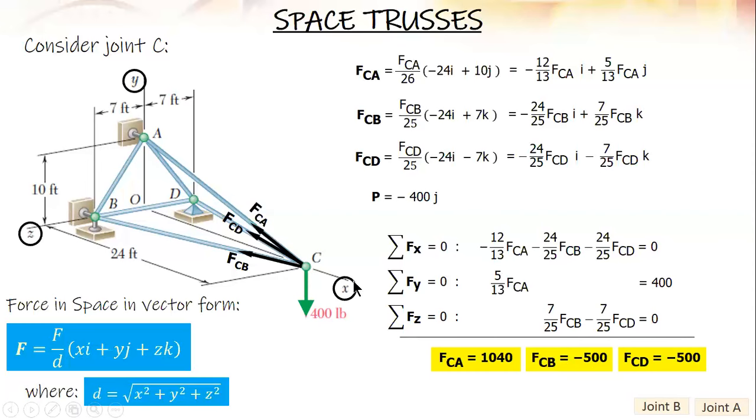After this, proceed to the joint with only three unknowns. At B you still have four unknowns: BA, BD, and two forces at the link. At D you still have five unknown forces: DA, DB, and three components from the reaction at D. So go to A. You already have the value of CA, so your unknowns are only AB, AD, and the force at the link. Let's proceed to joint A.